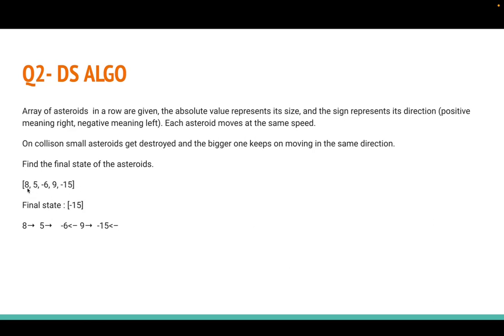On collision between two asteroids, the one with higher weight survives. For example, in this case with [8, 5, -6, 9, -15]: eight is moving right, five is moving right, six is moving left, nine is moving right, and fifteen is moving left. Eight and five won't collide because they're moving in the same direction. Five and six will collide and six will survive.